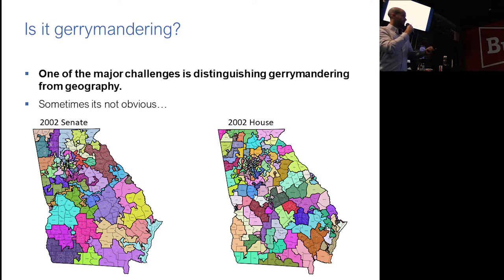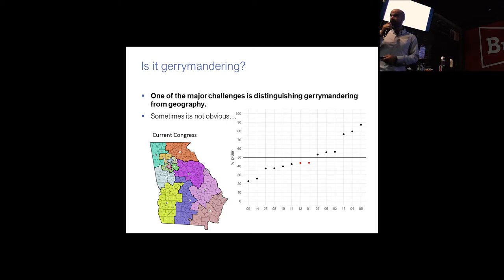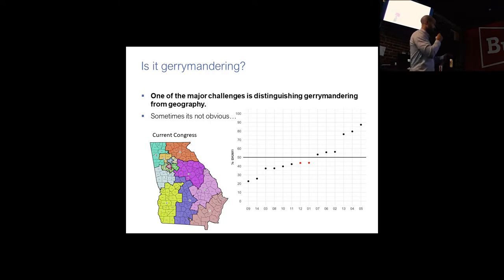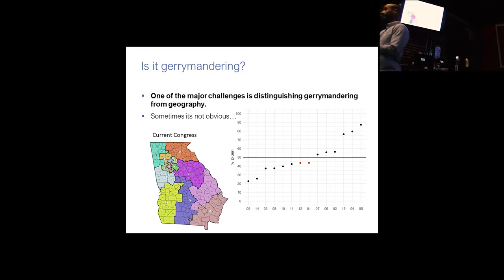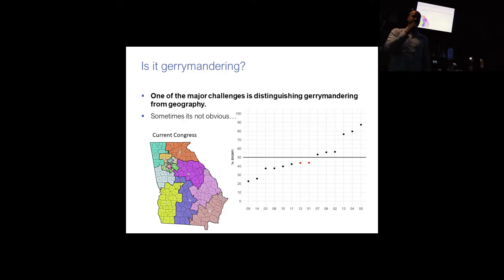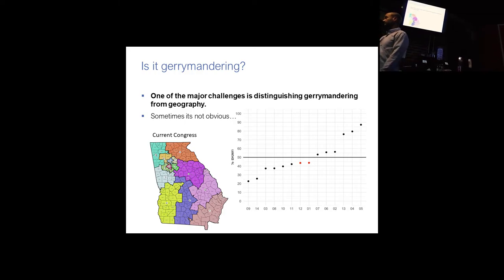Here is the current Congress. These districts were designed by Republicans, and they are not misshapen like you saw in 1992 and 2002. They're very different. So maybe it's not obvious that this is gerrymandered, if it's gerrymandered at all. Was it designed to give Republicans an advantage? Was it designed to give incumbents an advantage? It's hard to tell just by looking.